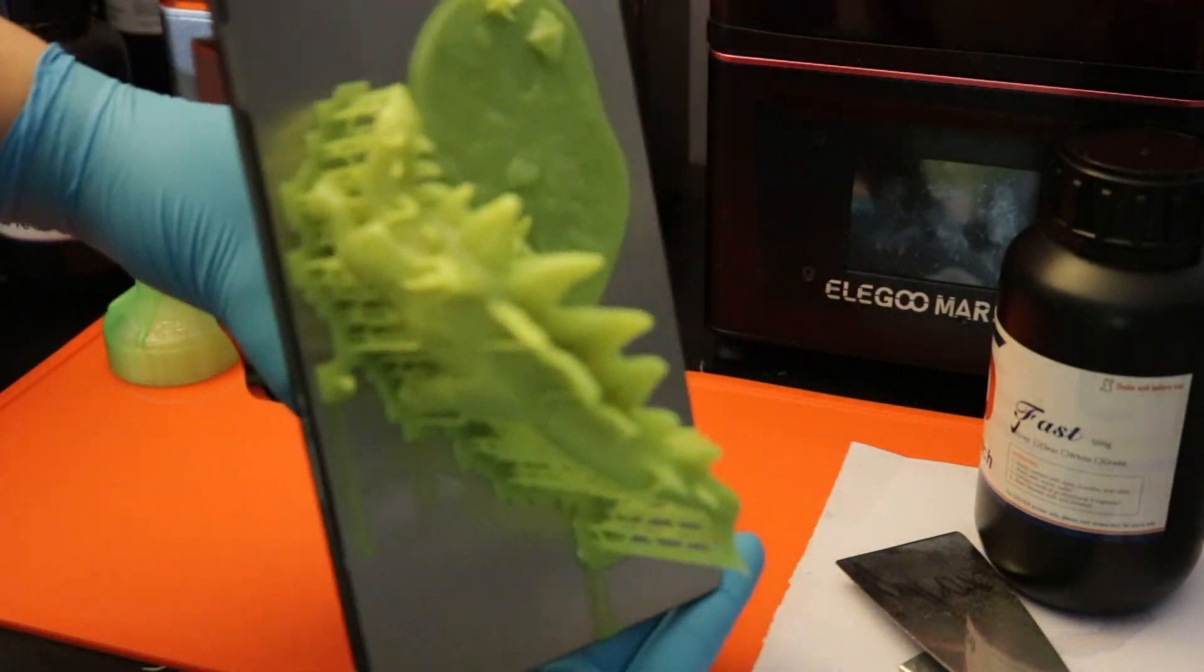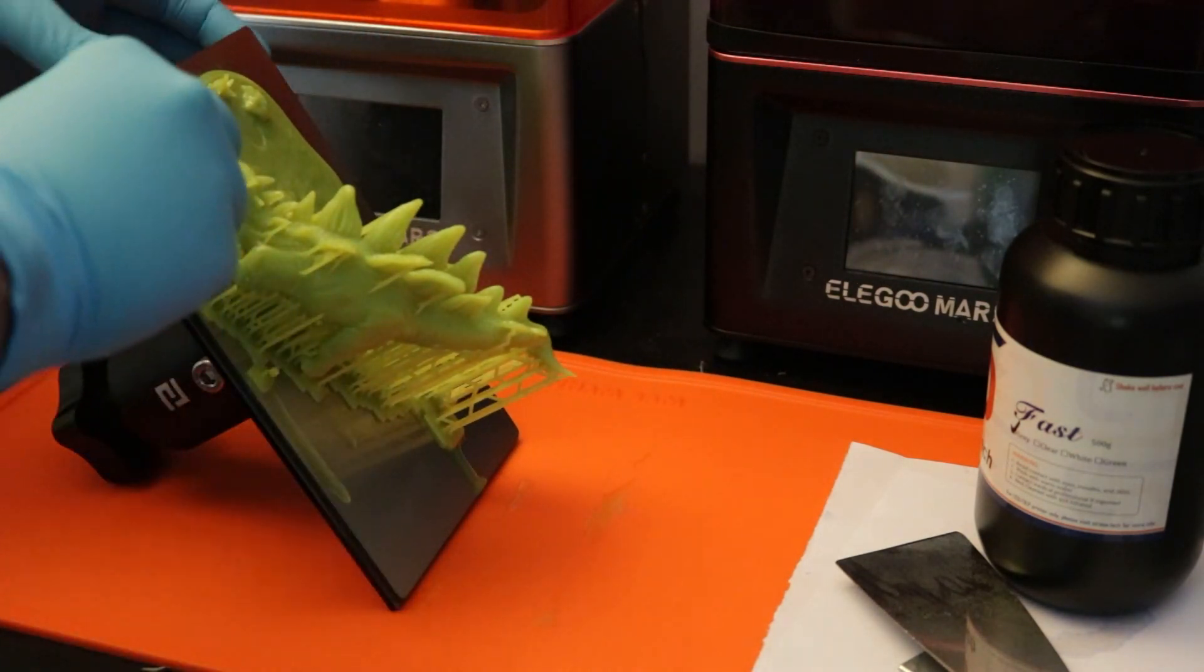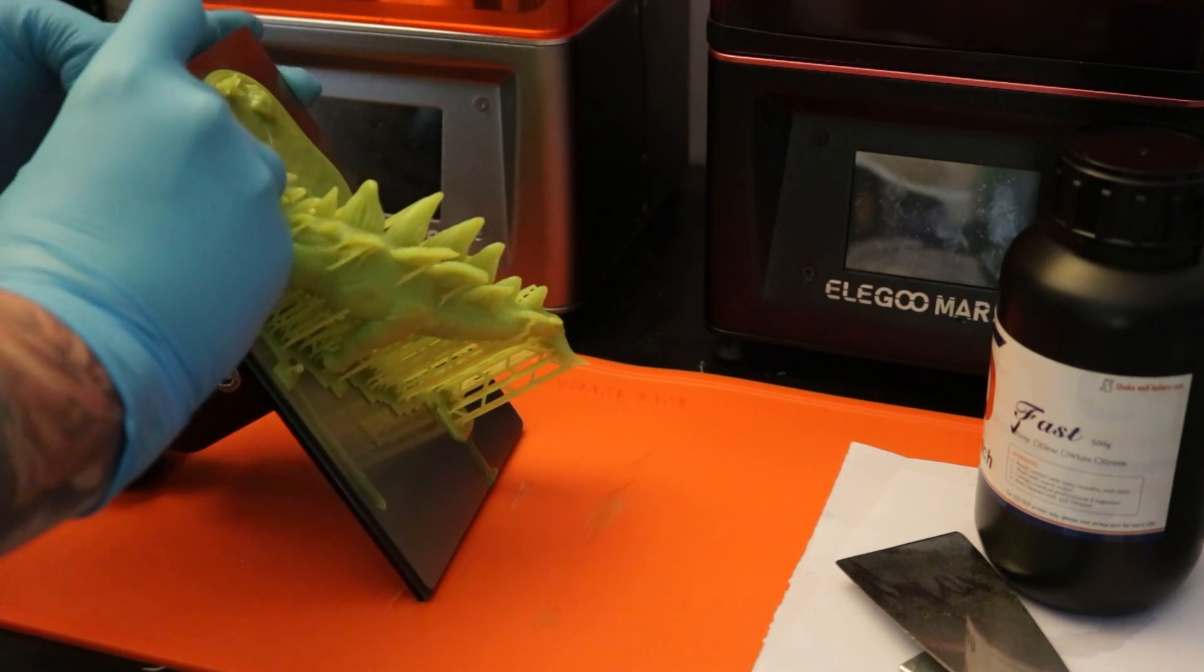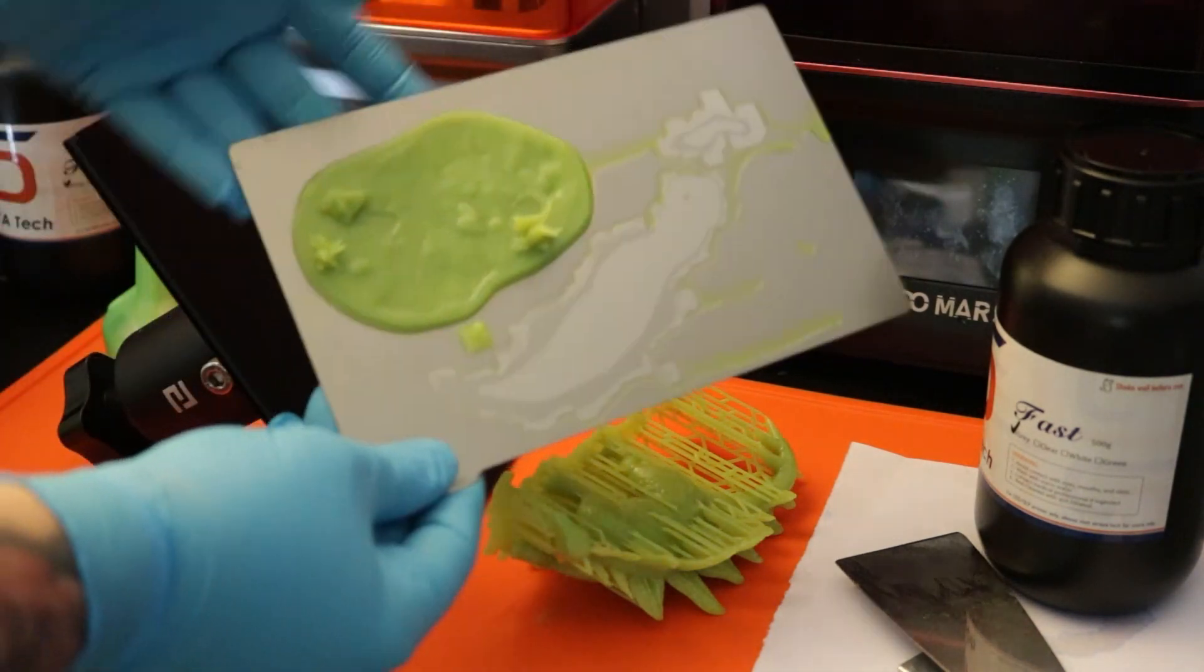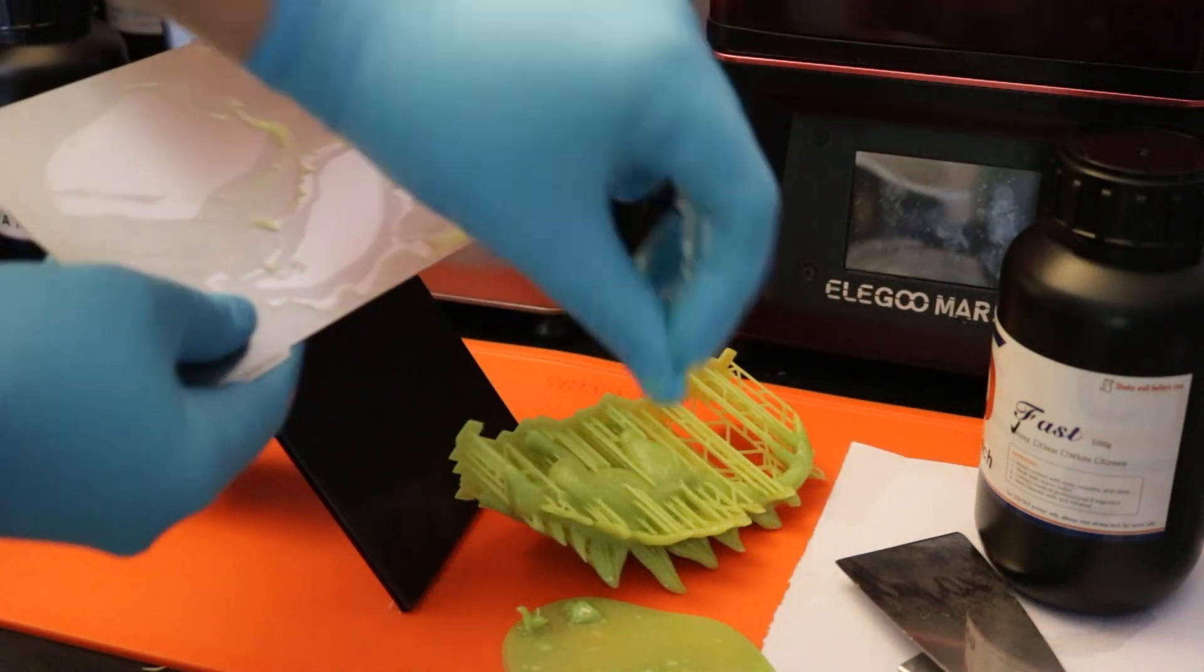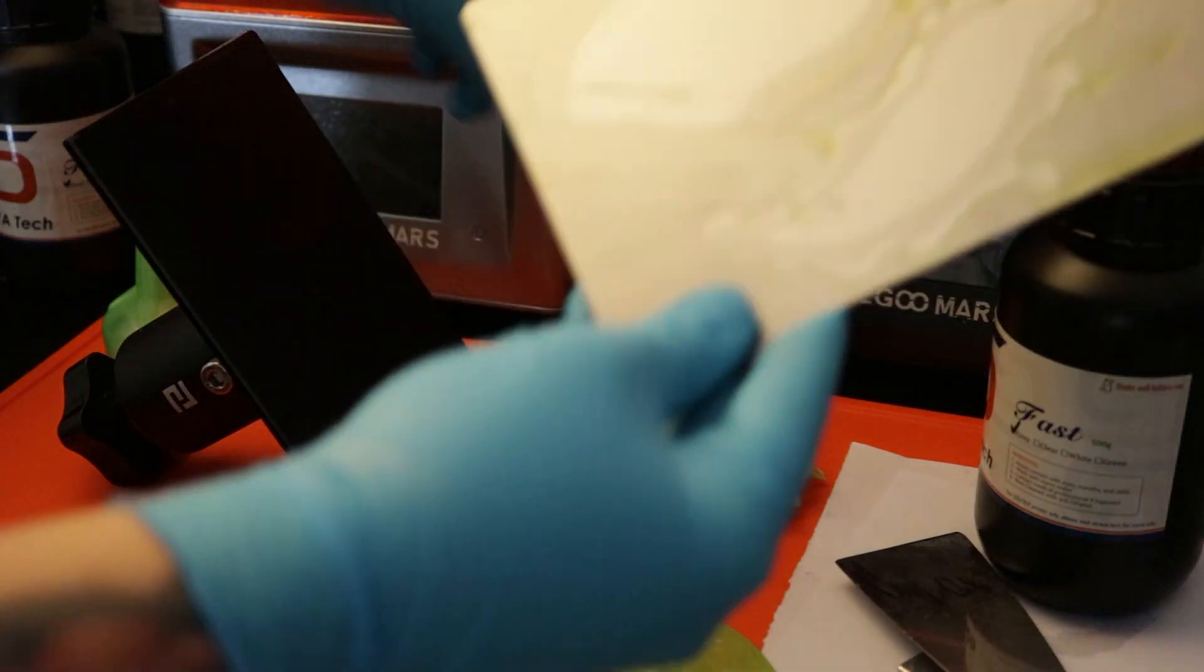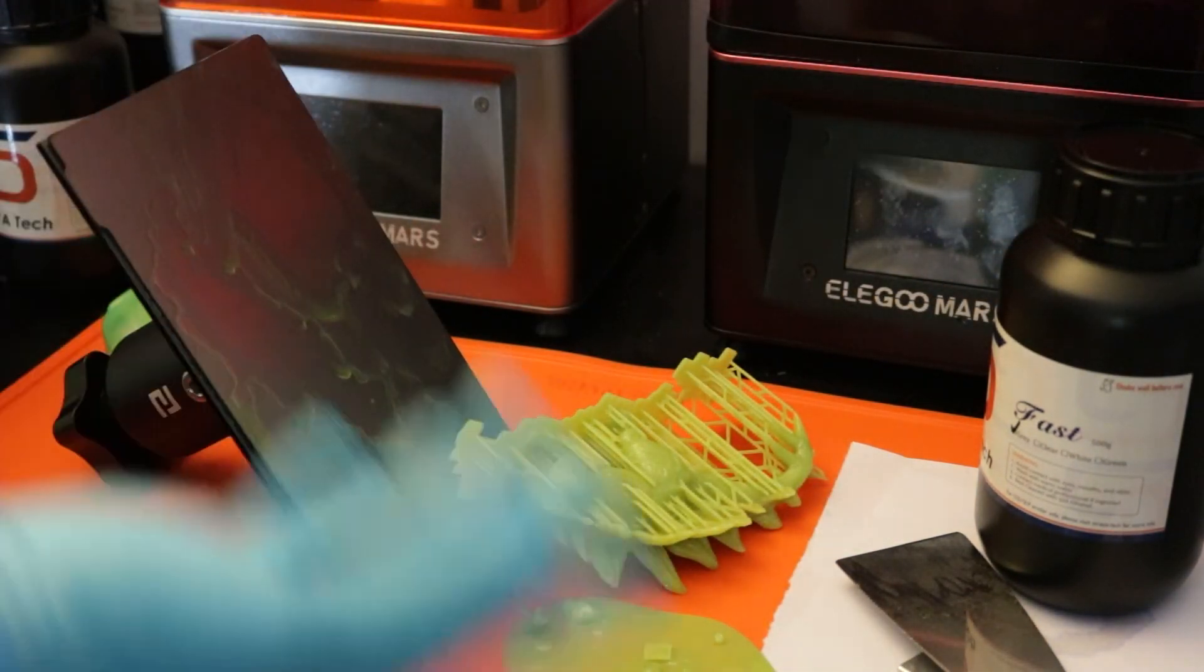Now we've got a print that we're pulling off the Wham Bam flex plate system here. This was off of the Elegoo Saturn. I did leave it on overnight. So as you can see right here, it's going to pop off super easy, super easy, maybe a little too easy. So be careful if you have left it on overnight because it will just pop right off. That base was printed directly on the build sheet. Super easy to pull off. So much easier than trying to pry it off with a scraper. Boom. Slap it back on. You're about ready to go for another print.